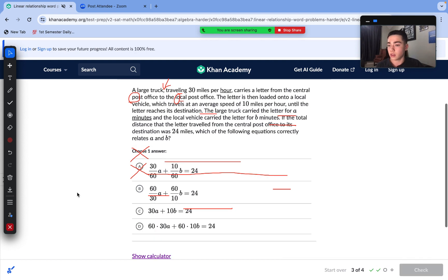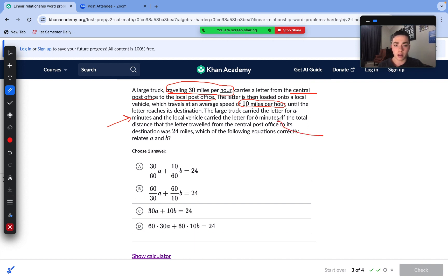Let's move to our next question. A large truck traveling at 30 miles per hour, they underline that, so of course we're going to have to circle this, carries a letter from the central post office to a local post office. Let's underline this as well. The letter is then loaded onto a local vehicle, which travels at an average speed of 10 miles per hour until the letter reaches its destination. The large truck carried the letter for A minutes, minutes, and the local vehicle carried the letter for B minutes. If the total distance that the letter traveled from the central post office to its destination, total is 24 miles, which of the following equations best relates A and B?